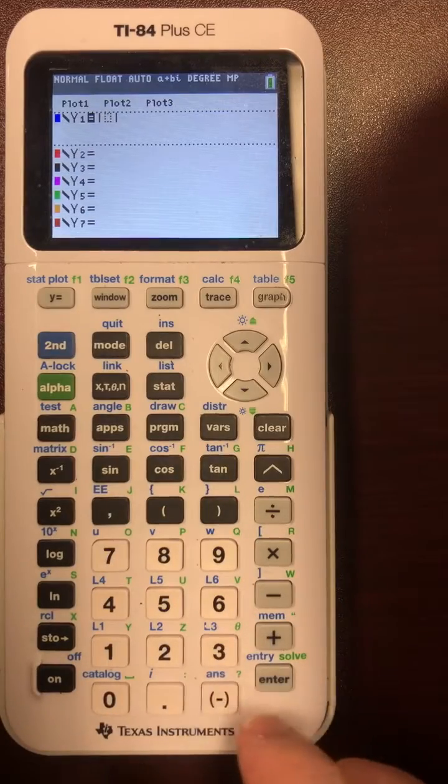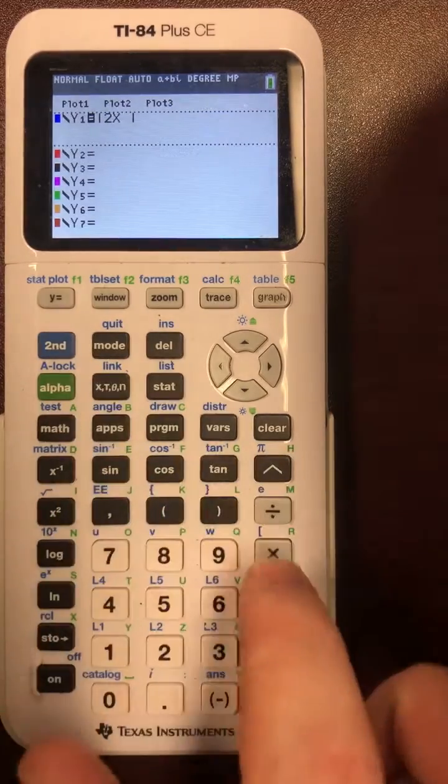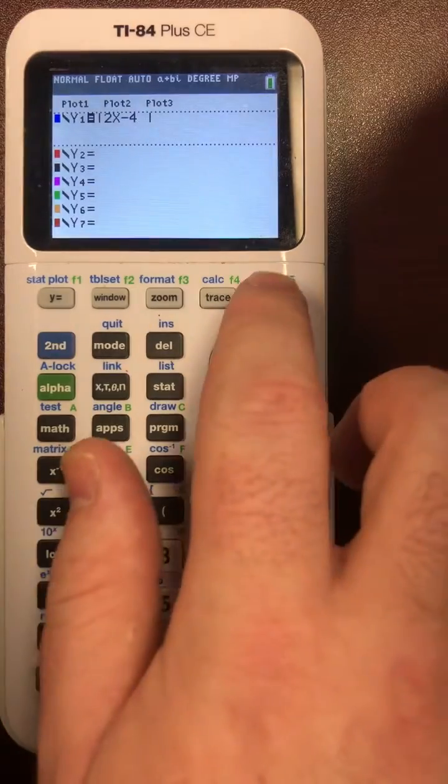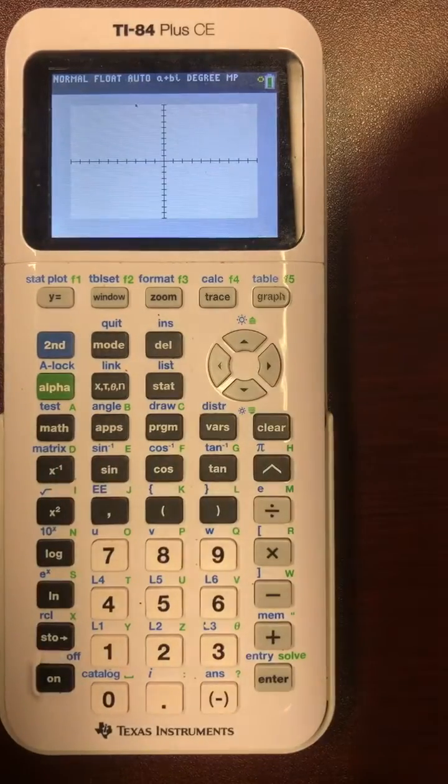So if you had what is the absolute value of 2x minus 4 then you could hit graph and it would draw it for you.